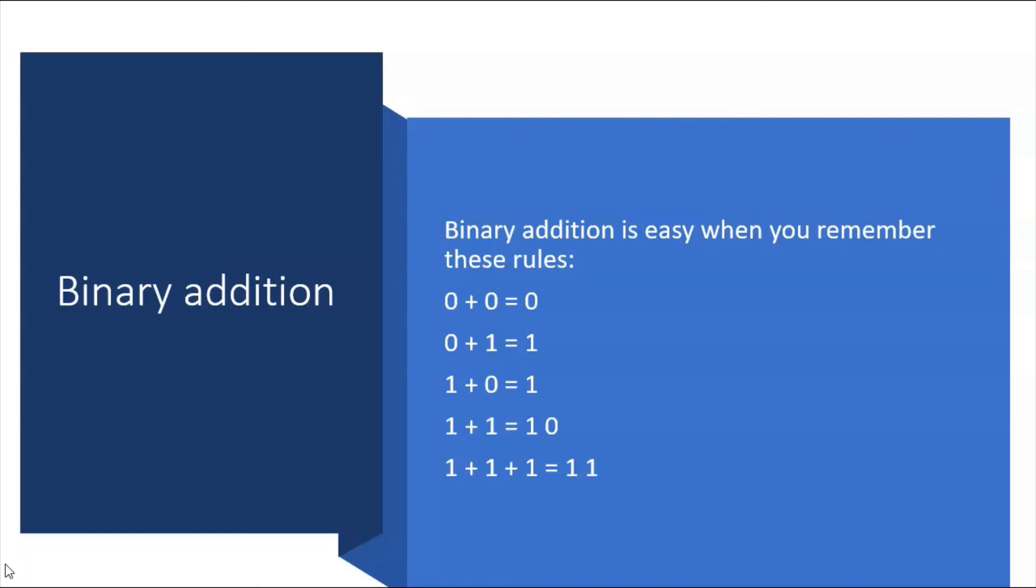If you can remember in a question: nothing plus 1 is 1, 1 plus nothing is 1, 1 plus 1 is 2—what is 2 in binary? It's 1 0. 1 plus 1 plus 1 is 3—what is 3 in binary? It's 1 1. And that is how you do binary addition.